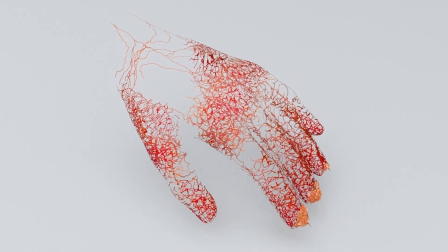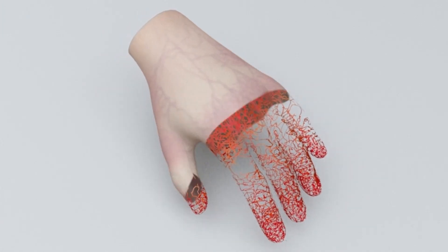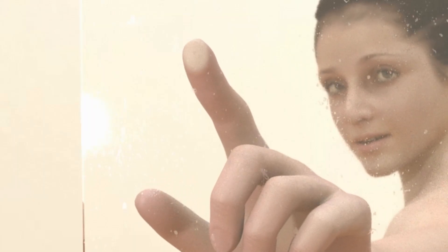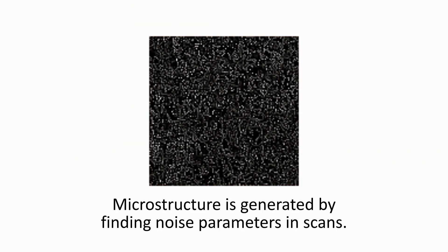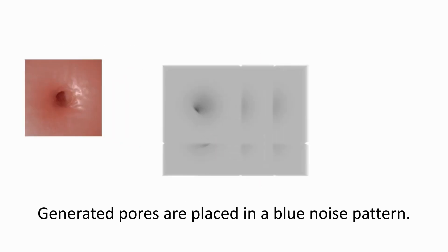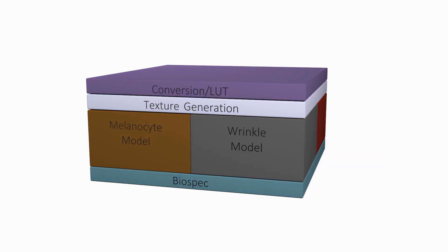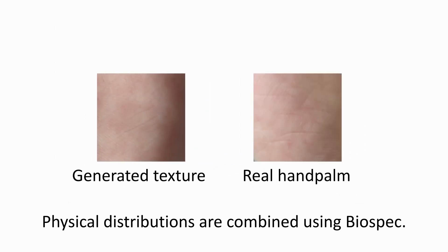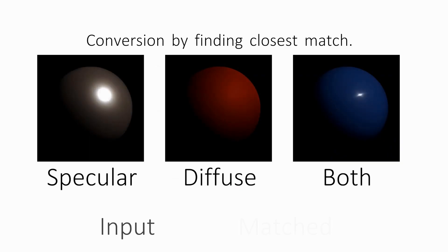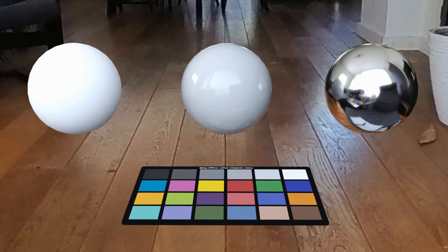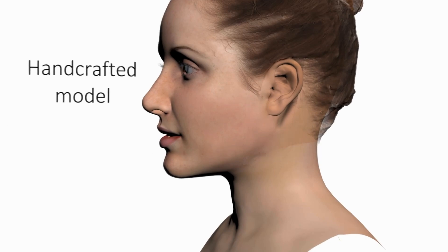This system also allows for dynamic changes in blood flow during animation, such as the evacuation of blood when pressure is applied. For skin features smaller than a pixel, we estimate noise parameters from scans. We also generate pores placed into the texture in a blue noise pattern. Each of these models generates distributions of biological parameters that are combined. We also show how to do this conversion in real time using a lookup table, which can generate a wide spectrum of skin texture variants. Finally, we provide a general method to convert BRDFs from one model to another, allowing BioSpec to be converted to a model your engine supports, enabling skin texture generation for handcrafted or generated meshes.